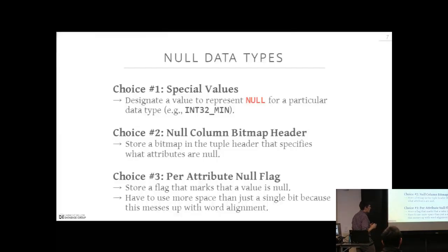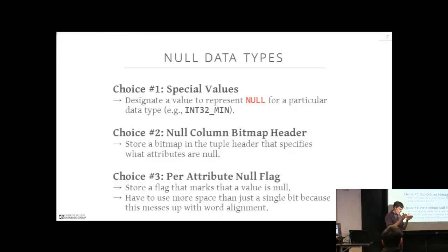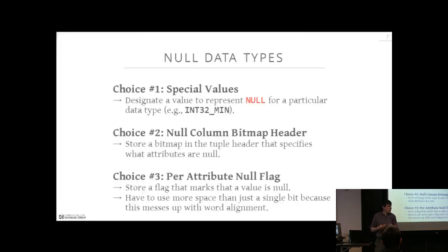The third approach stores a single null flag per attribute, embedded directly with the attribute value — a little space right in front of where the value is stored. This is what MemSQL does. The tricky part is that you must ensure tuples and attributes are word-aligned.